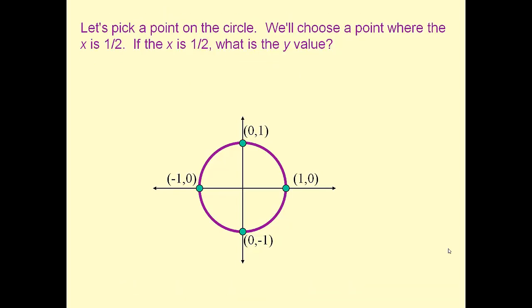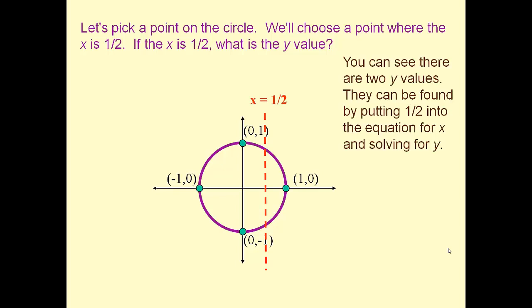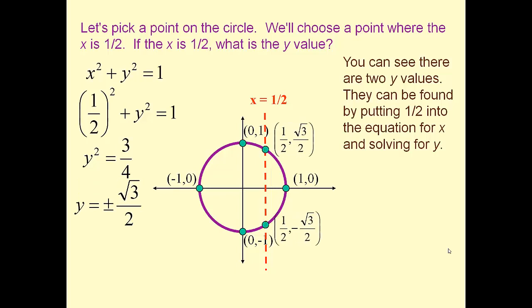So let's pick a point on the circle. We'll choose a point where the x is 1/2. If the x is 1/2, what is the y value? You can see there are two y values. They can be found by plugging 1/2 into the equation for x and solving for y. We're going to get y squared equals 3/4. When we take the square root, we get y equals plus or minus the square root of 3 over 2. So those two points are at 1/2, square root of 3 over 2 and 1/2, negative square root of 3 over 2.